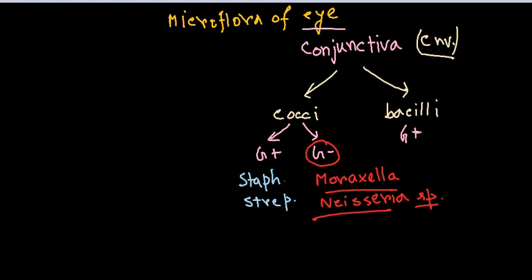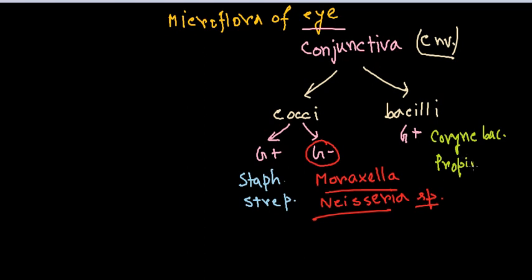For the gram-positive bacilli, we have Corynebacterium species as well as Propionibacterium species. These are the constant, characteristic organisms of the conjunctival microflora.